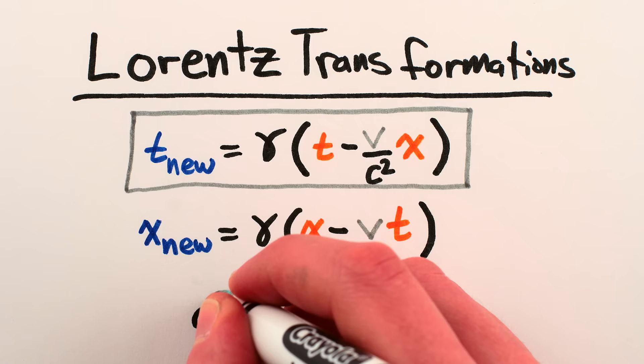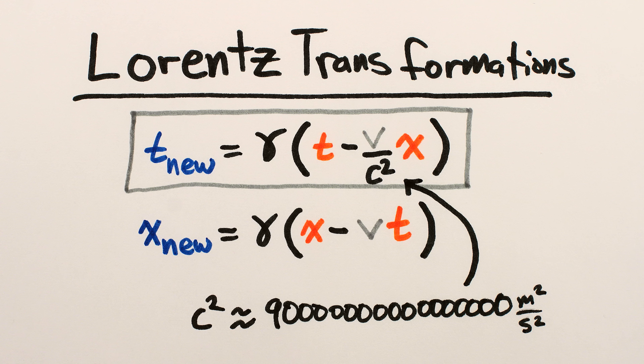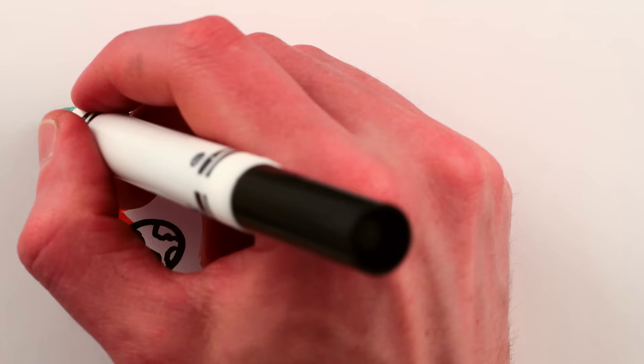Though because of the factor of c squared in the denominator, which is huge, it's hard to notice anything being out of sync until either your speed or distance to the object in question are really, really big.